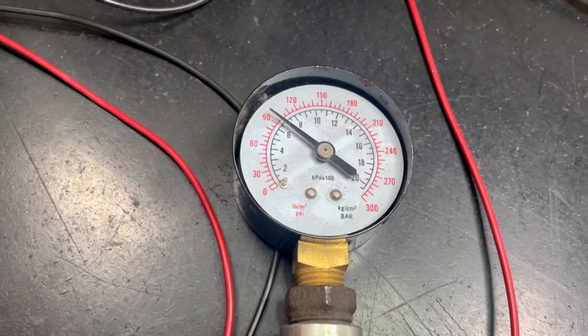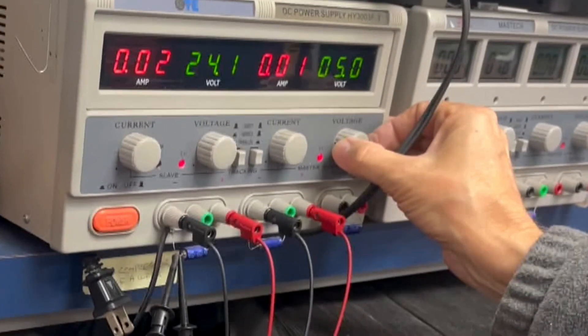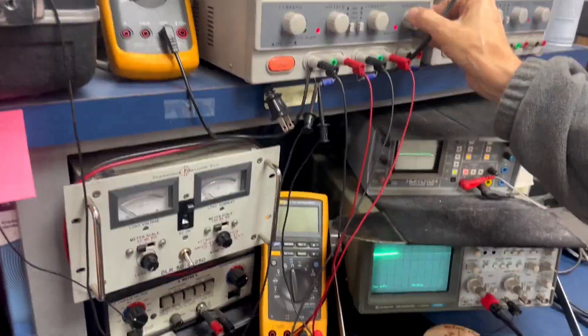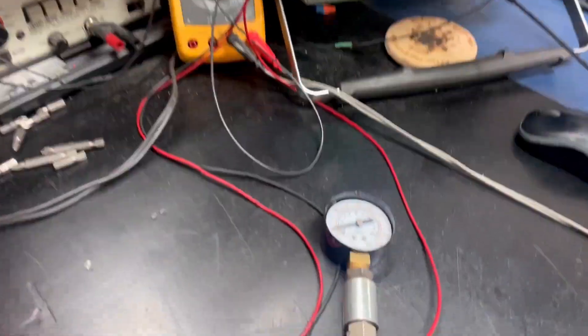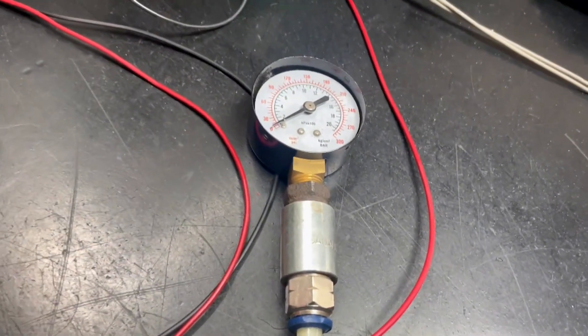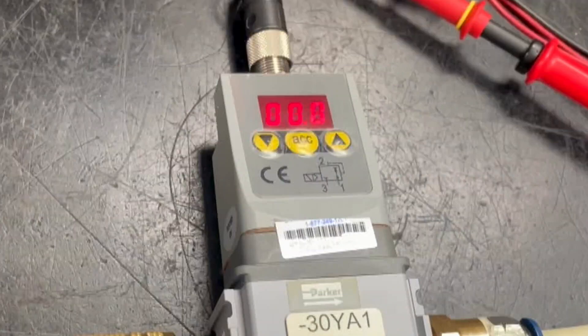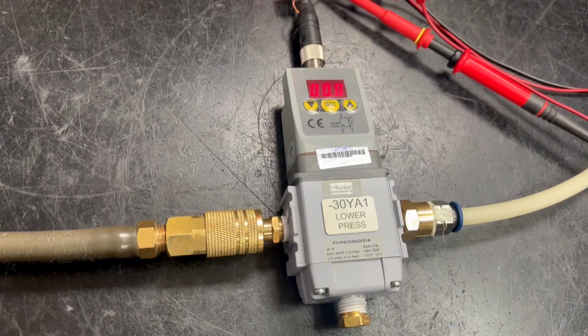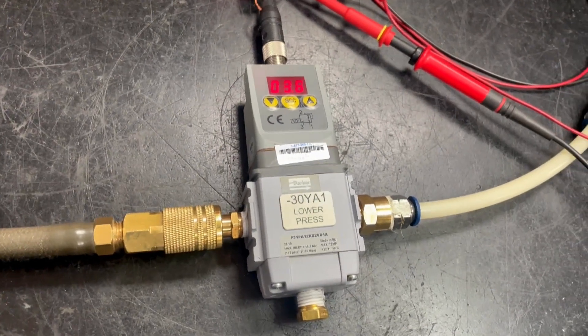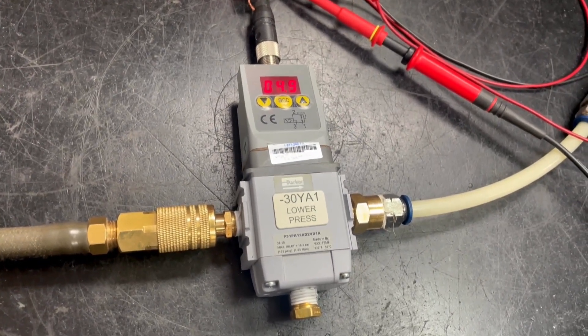And then we can also turn it back down. You can see that indeed we can control the output air. There is also a scale on the unit itself that reflects changes on the control voltage. That scale can be set however the customer wants it. And that's it.